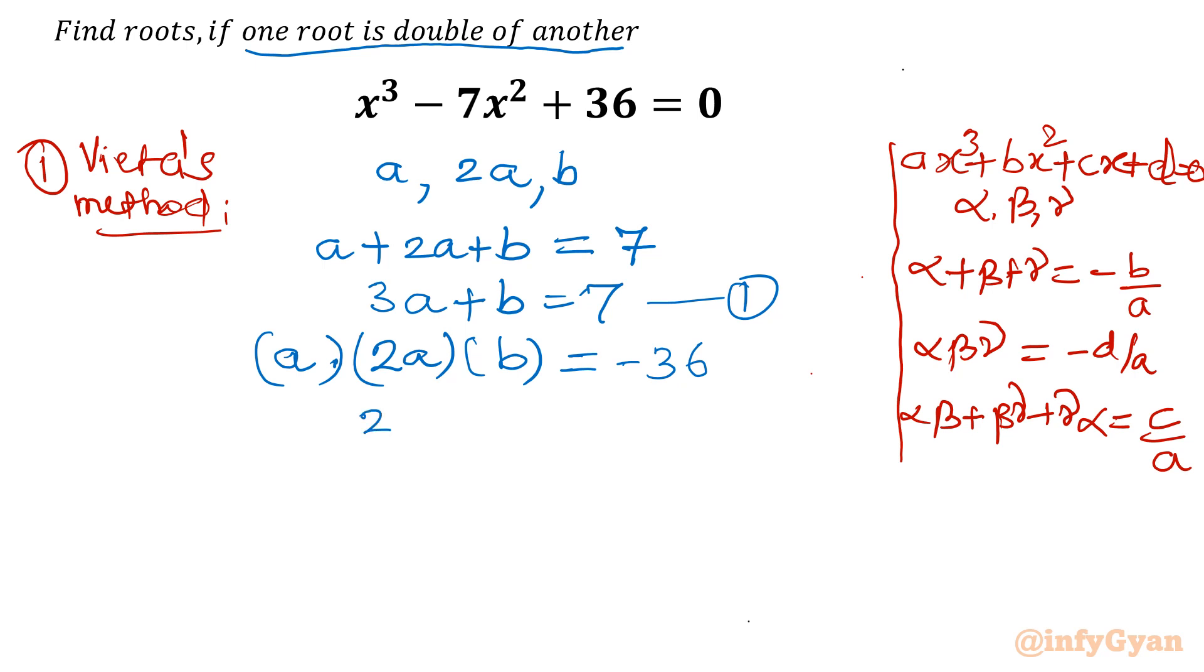So I will write 2a²b = -36, or a²b = -18. This is equation number 2. So now we have two equations. Now I will write the third one also.